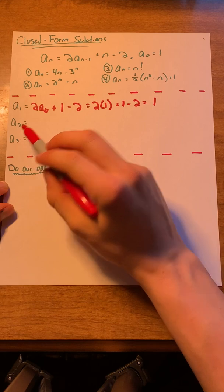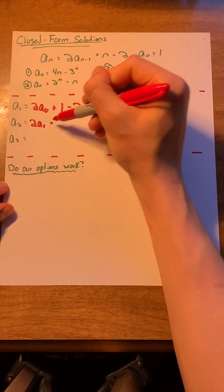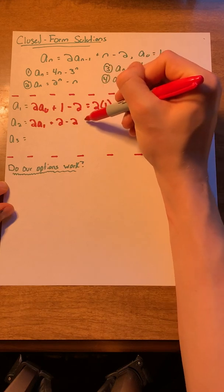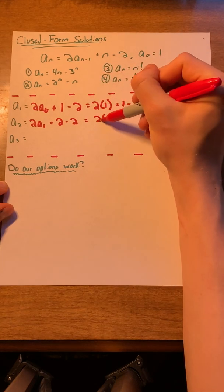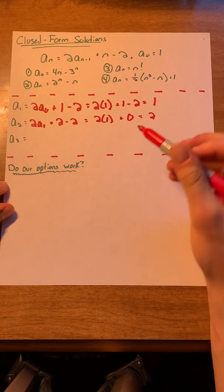Now let's solve for a of 2. a of 2 equals 2 a of 1 plus 2 minus 2. This equals 2 times 1 plus 0, which equals 2.